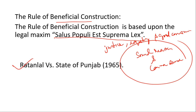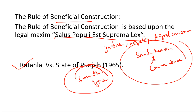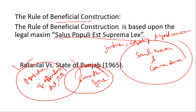The case is Ratanlal v. State of Punjab, 1965. In this case, a boy of 16 years of age was convicted for committing an offense of house trespass and outraging the modesty of a girl aged seven years. The magistrate sentenced him to six months of rigorous imprisonment. After the judgment, the Probation of Offenders Act 1958 came into force, which provided that a person below 20 years of age should not ordinarily be sentenced to imprisonment.